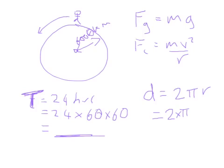It's 2 times π times 6 million. And that gives us the distance.